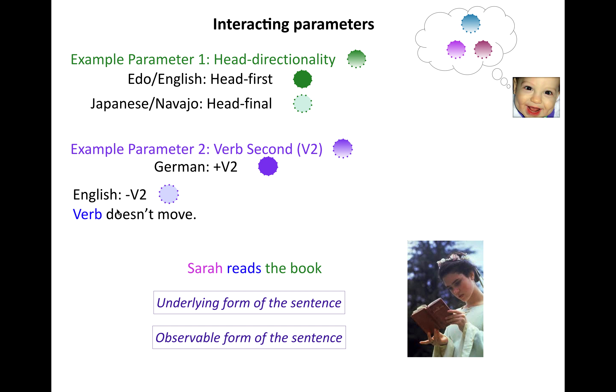So let's talk about the alternative option, which is minus verb second. And this is a language like English where the verb doesn't move. What you see is what you get, right? So you have the observable form of the sentence is really the same as the underlying form. So Sarah, the subject, reads the verb, the book, right? Okay.